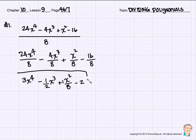So there's our answer, nice and simple, not so bad for this one. 3x to the 4th minus 1 half x cubed plus 1 eighth x squared minus 2. Pretty simple when there's only one number in the denominator.